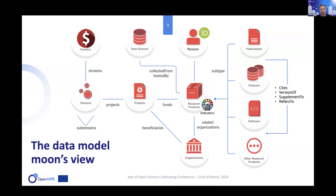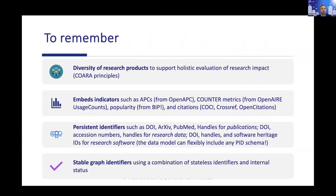We collect from 30 funder databases worldwide — from the US, Australia, Asia, and Europe, including the European Commission — and we try to link at the project level to products funded by those projects. We also have organizations, drawing from a large number of registries including ROR and many others. We are not focusing only on peer-reviewed publications but also extending to preprints, institutional repositories, research data, and software, because we foster the idea of reproducibility and monitoring across different kinds of researcher profiles.